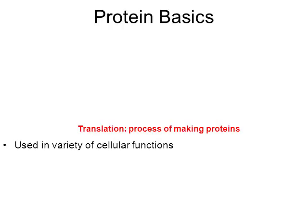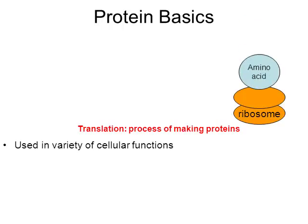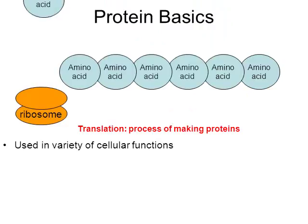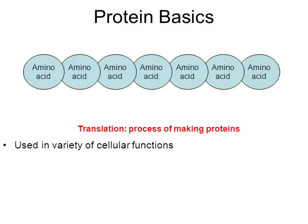The last process I want to quickly mention is translation. In this process, a ribosome makes proteins with the help of other kinds of proteins called enzymes. A ribosome gathers amino acid after amino acid, linking them into a big long chain. And that's what a protein is — a big chain of amino acids. All of these processes require proteins.